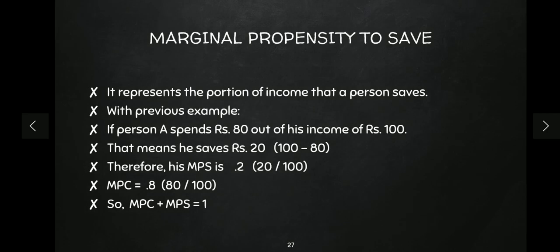Here is an example: if a person earns 100 rupees and consumes 80 rupees, their MPC is 0.8. That means they are saving 20 rupees, so their MPS is 0.2. This is how we simply calculate MPC and MPS. And keep in mind: MPC plus MPS always equals one.